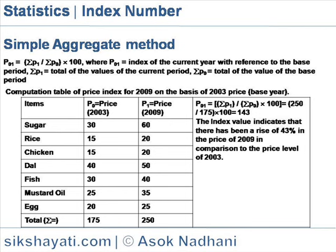P01 is equal to sigma P1 by sigma P0 into 100. Where P01 is the index of the current year with reference to the base period. P1 is total of the values of the current period. Sigma P0 is equal to total value of base period.